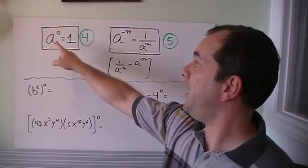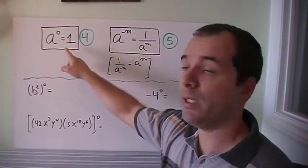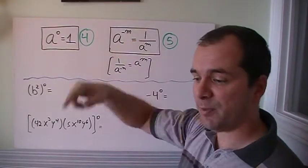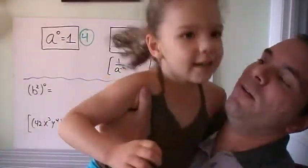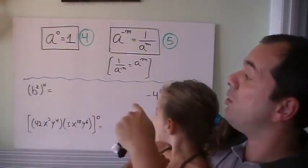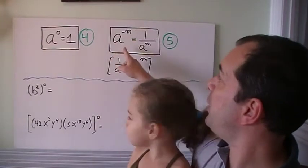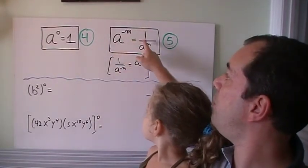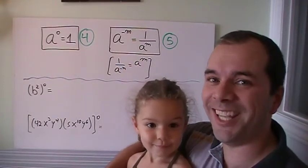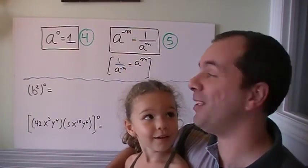So the rule is: a to the power of 0 is equal to 1, and that's rule number 4. And a to the power of a negative exponent, a to the power of negative m is equal to 1 over a to the power of m. And that's the 5th exponent rule.